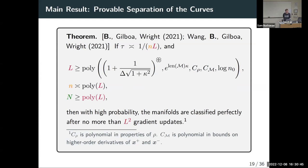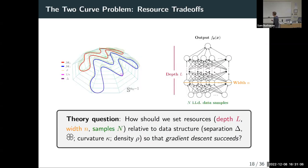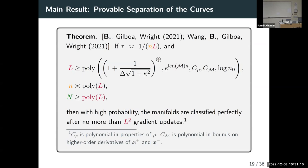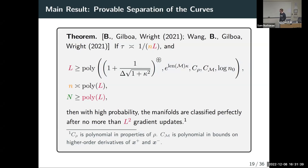The guarantee is that the manifolds are classified perfectly — the actual manifolds are separated by the classifier. Specifically, if I take the output of the neural network on M-plus and take its sign, it'll always be positive. And on M-minus, it'll always be negative. This is an L-infinity guarantee for generalization rather than L-2, and the L-infinity guarantee implies the usual L-2 type guarantees. Proving something like that does make these rates for us as well.